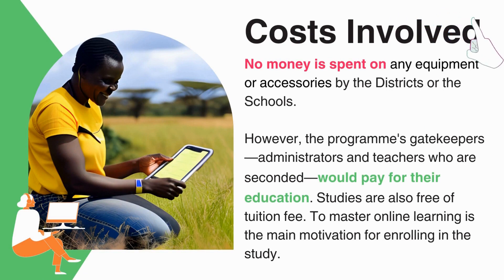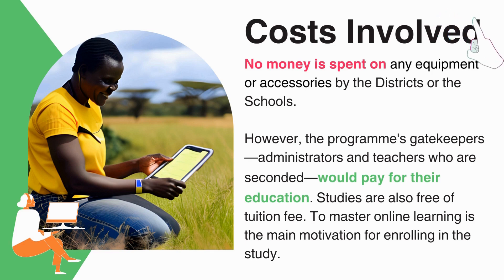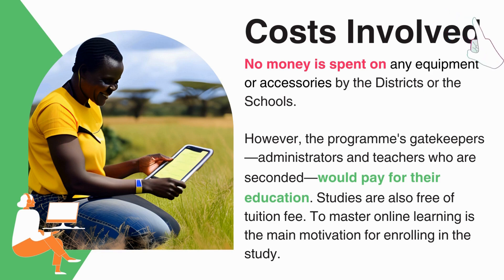Schools and the district office should know from the onset that there are no cost implications for the schools — meaning the school will receive computers and other things without paying anything. However, for the teachers, we cannot completely remove the fees because that would be very expensive for the university. So what we have done is lobbied the university to scrap off tuition fees, and the teachers only pay for exams every semester, plus the application and registration fees. There is no tuition — it is effectively free learning and 100% online.